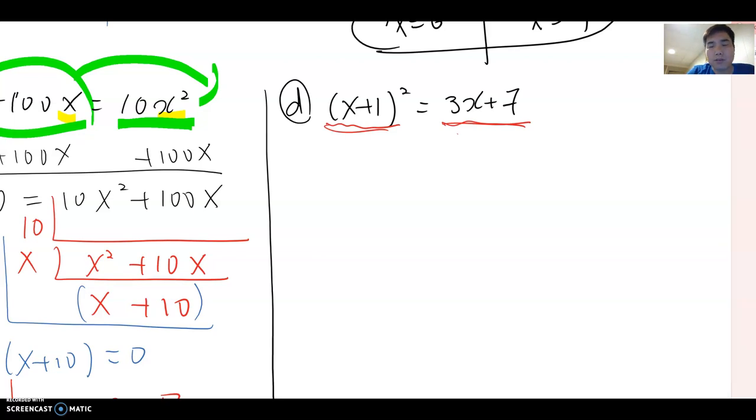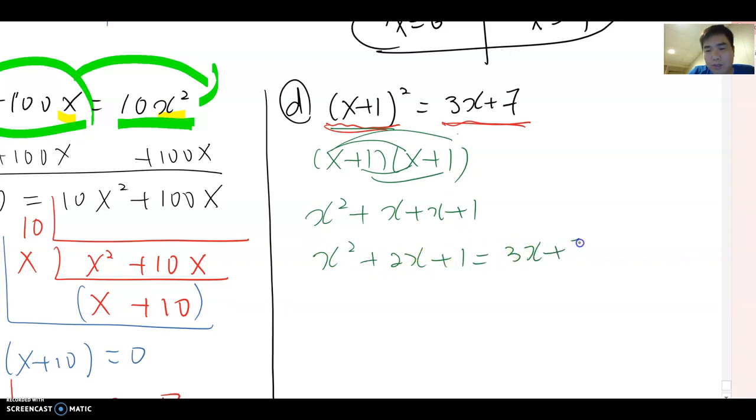x plus 1 squared means x plus 1 times x plus 1. Now, you multiply this out. Then, this becomes x squared plus x plus x plus 1. Therefore, x squared plus 2x plus 1 equals 3x plus 7. Don't forget, we have right side expression already. So, I just break it down here.